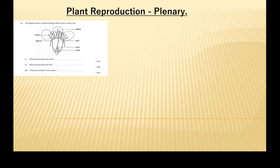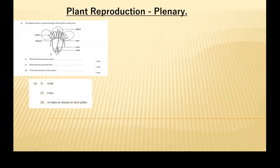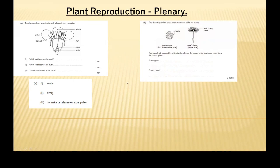So: the ovule becomes the seed, the ovary becomes the fruit. The anther contains, stores, or releases the pollen.